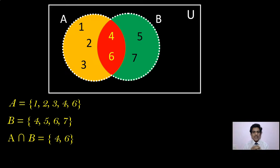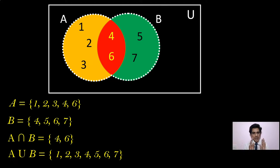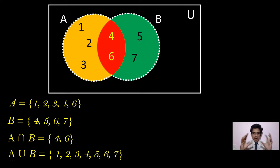All the elements in either A or B — that is 1, 2, 3, 4, 5, 6, 7 — gives us A union B. So by looking at the Venn Diagram, you can write what is A, what is B, what is A union B, and what is A intersection B. When you write all the elements inside the first circle, that gives you set A. Elements in the second circle give you set B. Elements in the common part give you A intersection B. All elements together give you A union B.